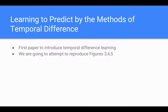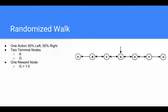This was the first paper to introduce the temporal difference learning algorithm. Temporal difference learning is a way to estimate values at nodes in a Markov decision process. Specifically, we are trying to reproduce figures 3, 4, and 5.